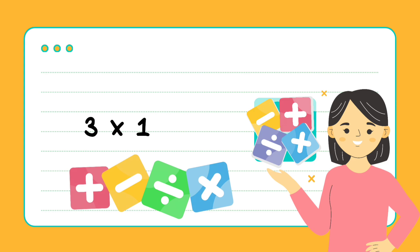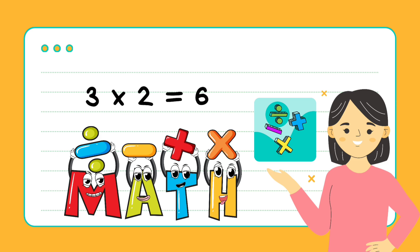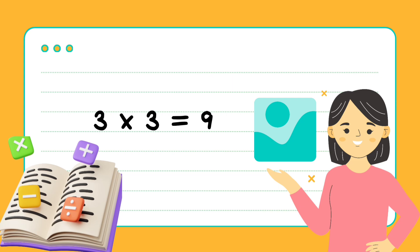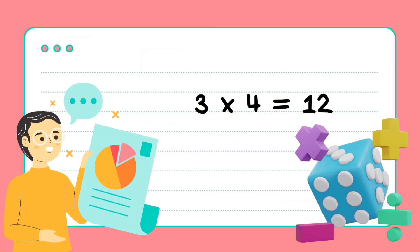3 times 1 is 3, hooray, hooray. 3 times 2 is 6, today, today. 3 times 3 is 9, you see. 3 times 4 is 12, whoopee.